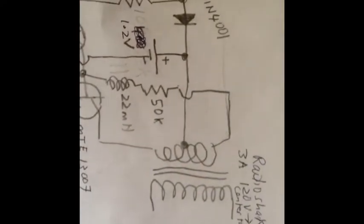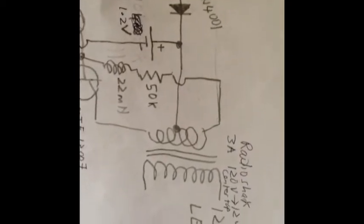I've got two MJE13007 transistors, as you can see there, and one of the transistors pulls down the base voltage on the other transistor when there's light shining on the solar cell to keep the circuit turned off.